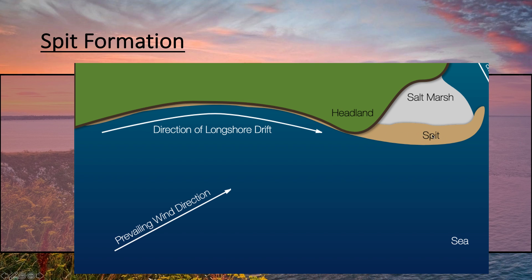When the spit reaches a certain size, a different wind direction begins to affect it. You can see the spit has a little curve — it sort of looks like an upward-facing hand or finger. The spit curves around because the wind direction has changed. The original prevailing wind was in one direction, but in this area the wind direction shifts, which curves the spit around.